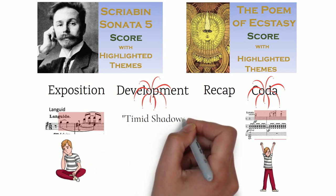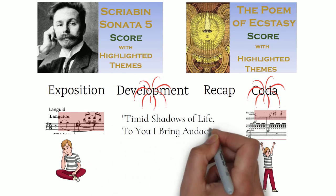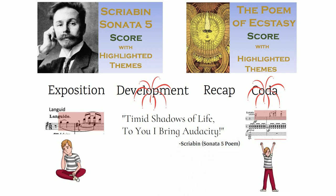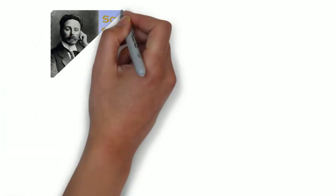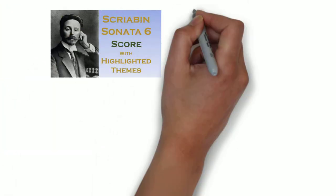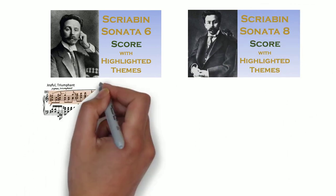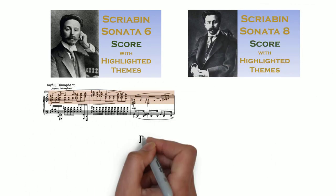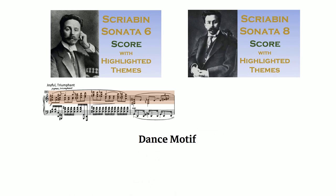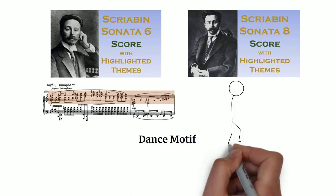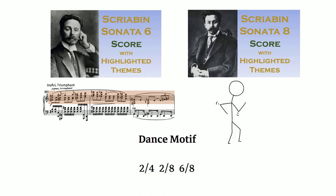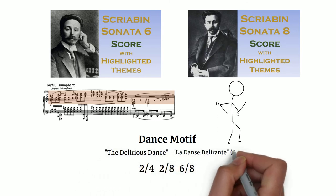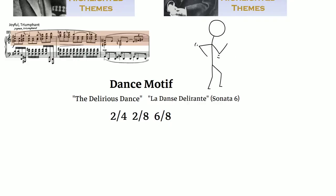In Sonata 5, this relates to the narrative about bringing audacity to timid shadows of life. Sonatas 6 and 8 don't really have climaxes; instead they have abrupt bursts of energy, and they end with Scriabin's reoccurring dance motif. This dance motif has two beats per measure, and its intense speed can be used as a substitute for a climax.